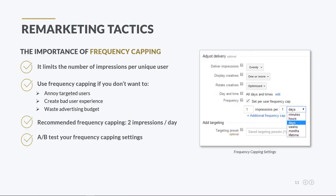Given that remarketing ads follow the target audiences around the internet, advertisers need to limit how many times a unique user sees a particular ad in a given time frame. Not doing so may annoy your target audience, which can result in creating a bad user experience, something that can negatively impact your conversion numbers.